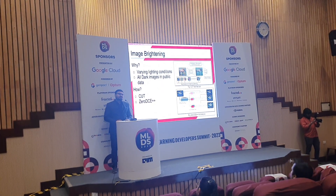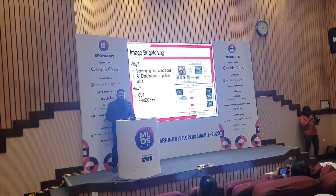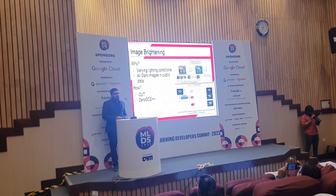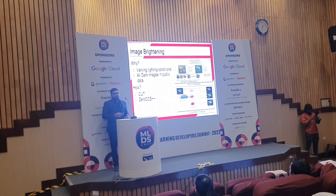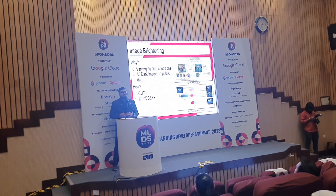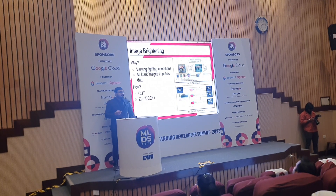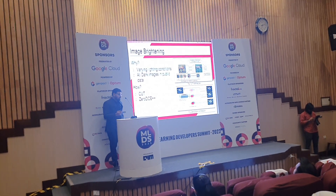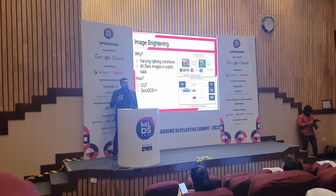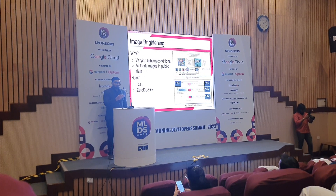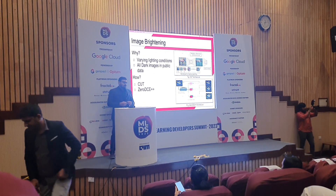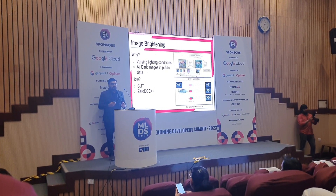The second approach is image brightening, as the public data lacked variety in different lighting conditions. We used two methods. The first is contrastive unpaired translation, similar to CycleGAN - an unpaired image-to-image translation method. Given an image in the source domain, it learns the translation to the target domain. For training, we used dark images from the public data in the source domain and brightened images from the real-time data in the target domain. After training, we were able to simulate different extents of lighting in the dataset.